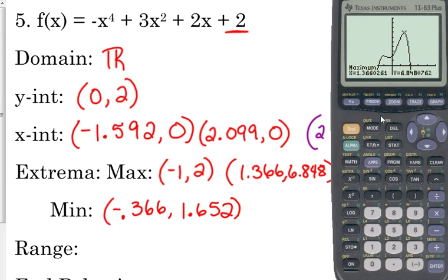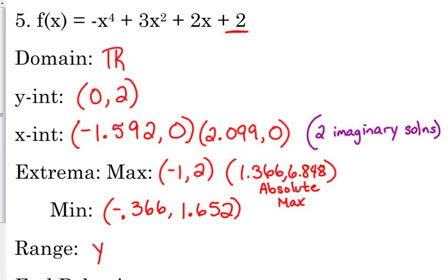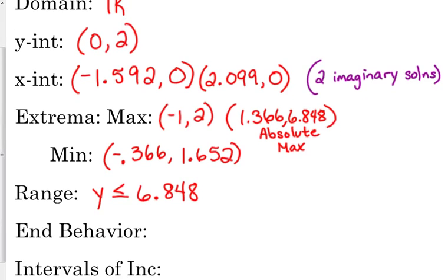Now, after I talk about my extrema, I like to go ahead and do my range, because I was just looking at maximum and minimum values, so it's kind of natural to identify my range at this point. So, looking at this graph, this last maximum that I found, we actually call that an absolute maximum. The other one is just a relative maximum. This one is an absolute, because that is the very highest y value that my function is going to achieve. The graph never goes above that point. There will never be a y value as an output of this function that's bigger than 6.848. So, that means my range is y - it's always talking about your y values - it's less than or equal to, because all my y values are below that maximum y value, 6.848.